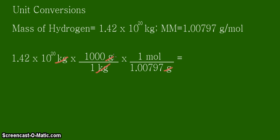That's our desired unit. All we need to do now is simply calculate for the answer. After the calculation we arrive at the answer as 1.409 times 10 to the 23 moles of hydrogen atoms in the ocean.